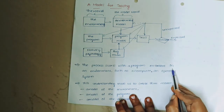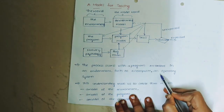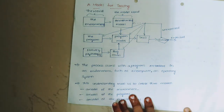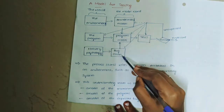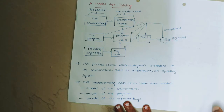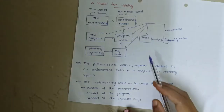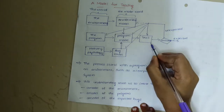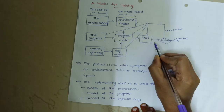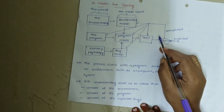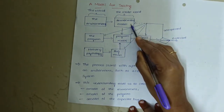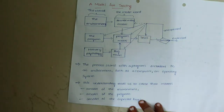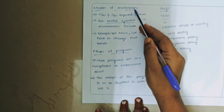The process starts with a program embedded in the environment, such as a computer and operating system. This understanding leads us to create models: the environment, the program, and expected bugs. In these models, we create a set of tests which are executed. The result of each test can be expected or unexpected. If unexpected, it may lead us to revise the test, our model, our concept of how the program behaves, what bugs are possible, or the program itself.